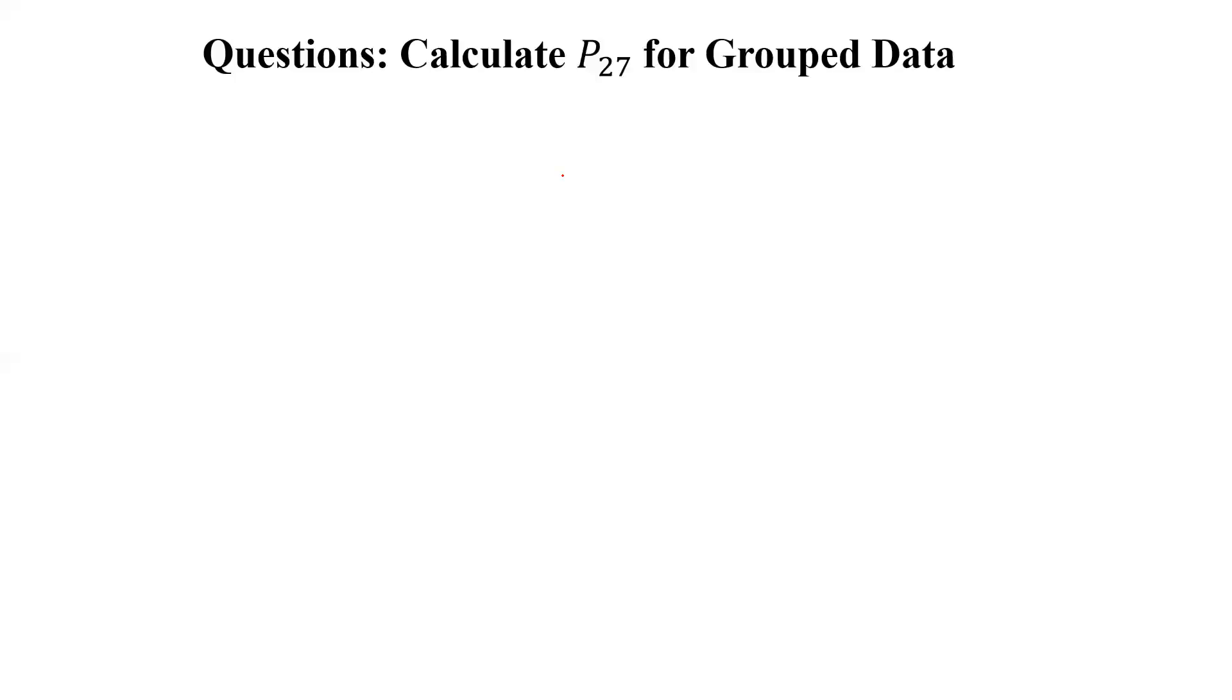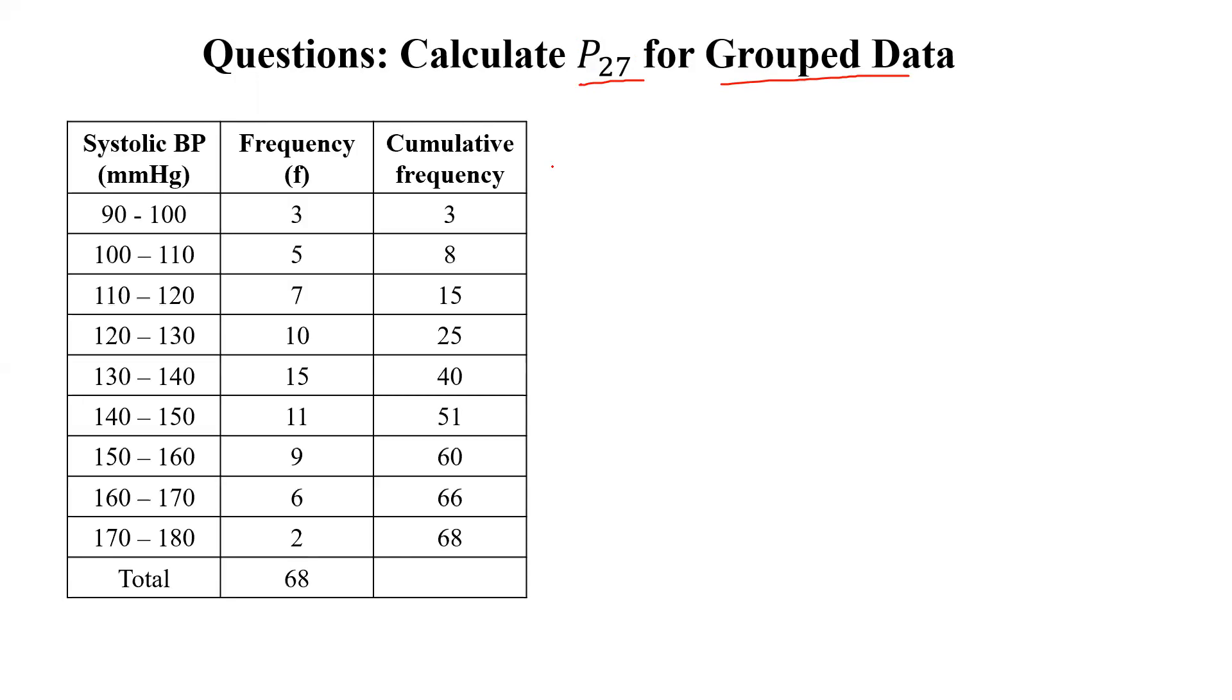Hello, here we will discuss calculation for P27 for grouped data. P27 means 27th percentile. If we have grouped data given, then how to calculate P27? First, in the question, we have grouped data - systolic blood pressure and corresponding frequency is given.